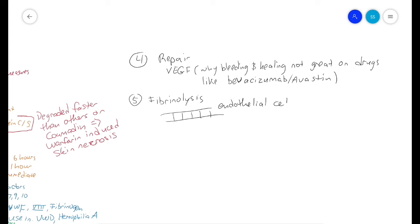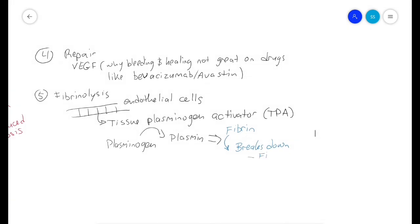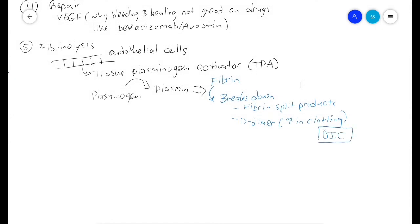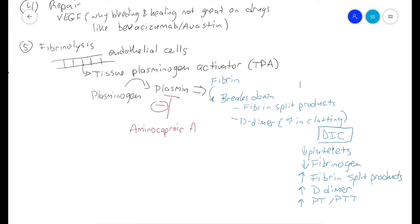After the clot has formed, it eventually needs to break down as the tissues heal - that's fibrinolysis. The endothelial cells secrete tissue plasminogen activator (tPA), which is a drug we can give in stroke patients. TPA activates plasminogen to plasmin, and plasmin breaks fibrin down into fibrin split products. Fibrin split products go up after tPA, and one is D-dimer. D-dimer levels go up after blood clotting as clots are broken down. Specifically, DIC (disseminated intravascular coagulation), which happens in sepsis, causes low platelets, low fibrinogen, increased fibrin split products, increased D-dimer, and increased PT and PTT. Plasmin can be counteracted with aminocaproic acid (Amicar).